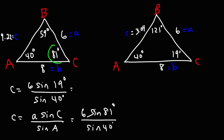Note that the largest angle is across the longest side, and the shortest angle is across the shortest side. The same is true for the second triangle: 121 is the largest angle and 8 is the longest side, while 19 is the smallest angle and C, which is 3.04, is the shortest side. That's it for this video — now you know how to use the Law of Sines formula to solve these types of triangles.